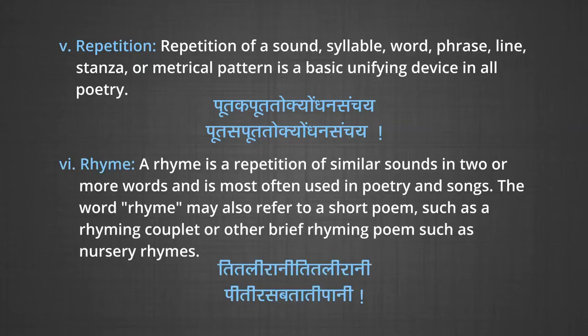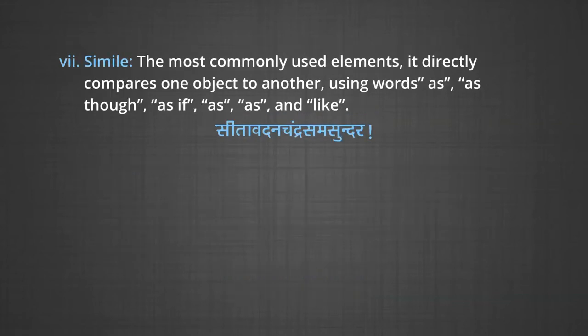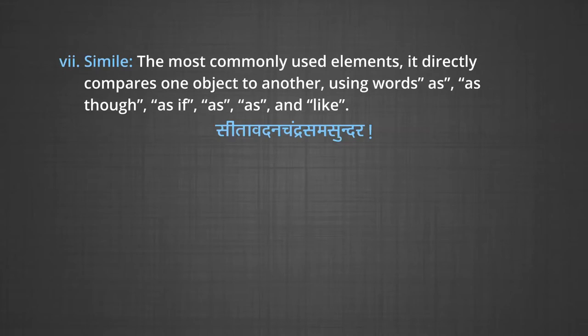Then another element is rhyme — a rhyme is a repetition of similar sounds in two or more words and is most often used in poetry and songs. The word rhyme may also refer to a short poem, such as a rhyming couplet or other brief rhyming poems such as nursery rhymes: 'titli rani, titli rani, piti ras batati paani.' Another element is simile — the most commonly used element, it directly compares one object to another using words such as 'as though,' 'as if,' 'as,' and 'like.' For example: 'Sita vadan chandra sama sundar.'